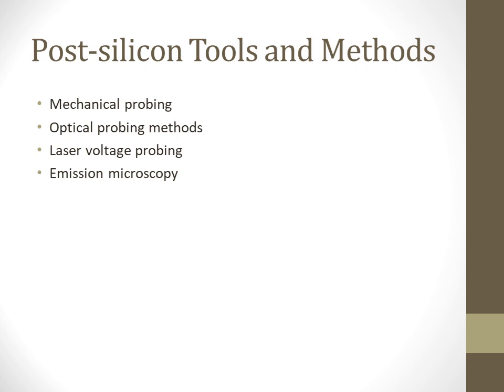Optical probing allows the backside of the device to be probed after appropriate processing. This method takes advantage of the fact that silicon is transparent to infrared light, and methods can be either active or passive. Another method is laser voltage probing, where an infrared laser beam is applied through the backside of the device and illuminates the diffusion of a transistor. By observing the reflected laser light, it is possible to determine when voltage transitions occur on a given node, providing oscilloscope-like traces of individual signals extremely useful in debugging timing-related failures.